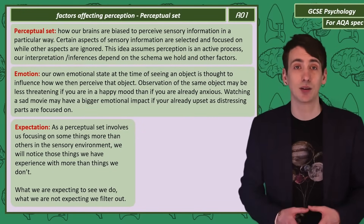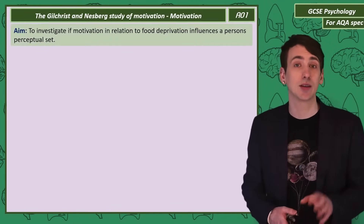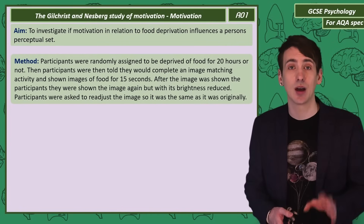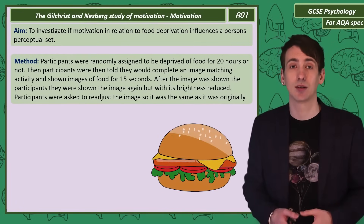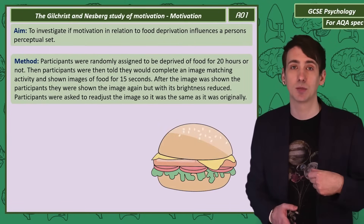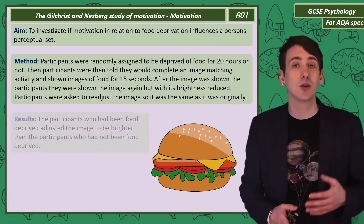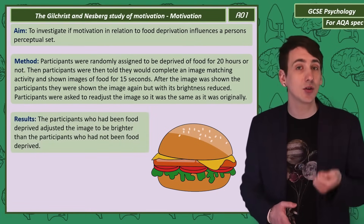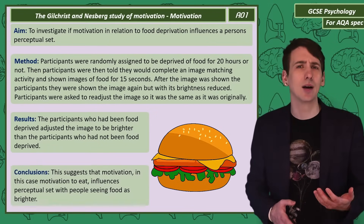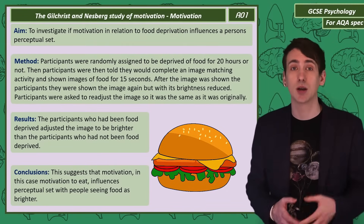Gilchrist and Nesberg investigated if motivation for food influenced perceptual set. They assigned participants to either be deprived of food for 20 hours or not at all. Both groups were shown images of food for 15 seconds, after which the image was turned off and shown again with reduced brightness. Participants were then asked to readjust the image to match the original brightness. Gilchrist and Nesberg found that food-deprived participants adjusted the image to be brighter than non-deprived participants, concluding that motivation — such as the motivation to eat — does change a person's perceptual set, making food appear brighter to hungry people.